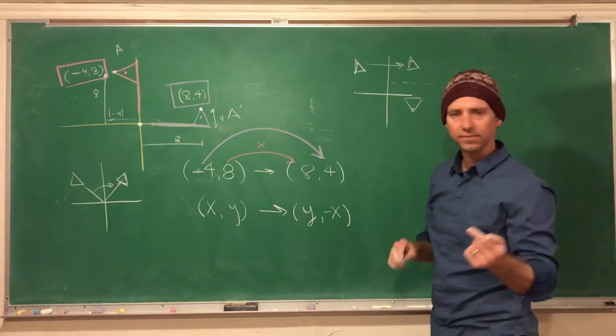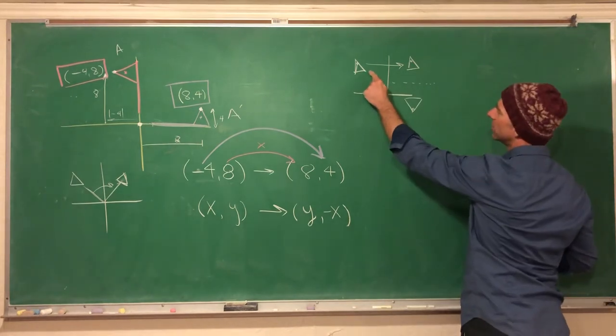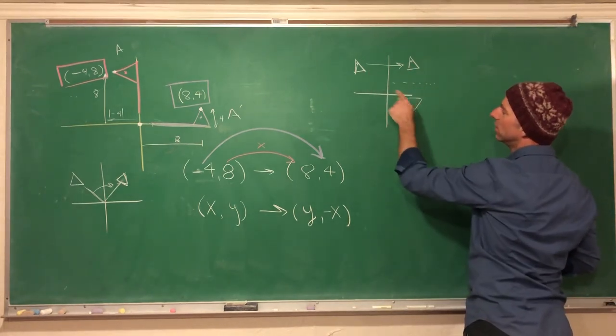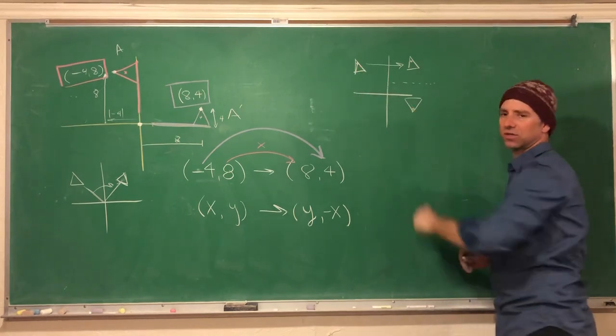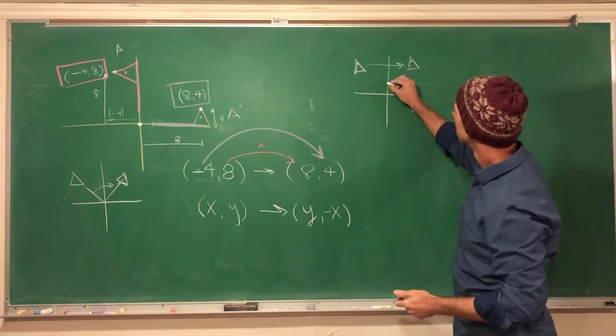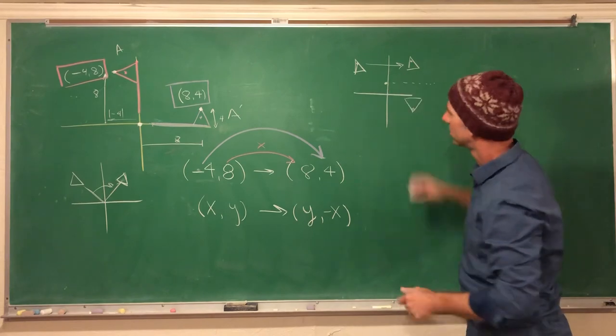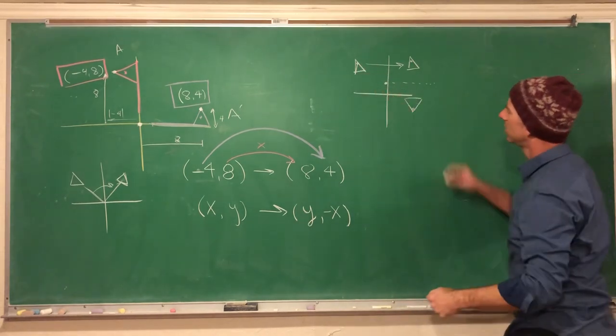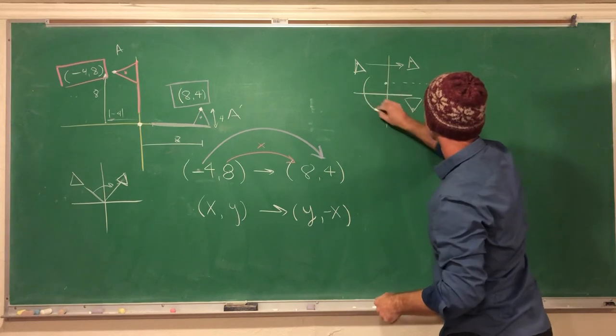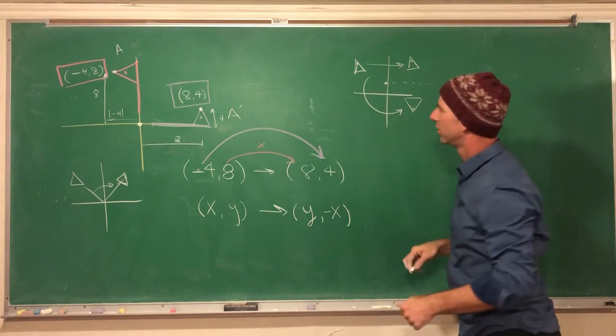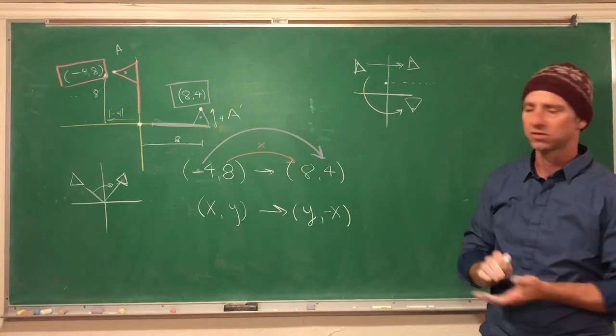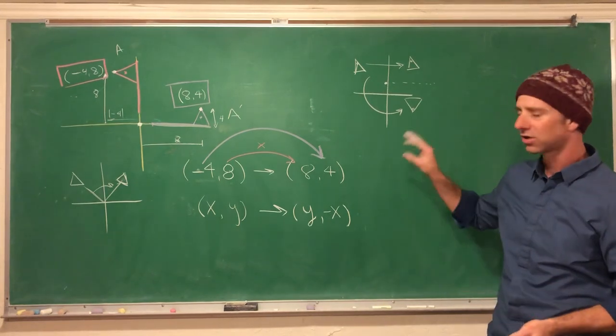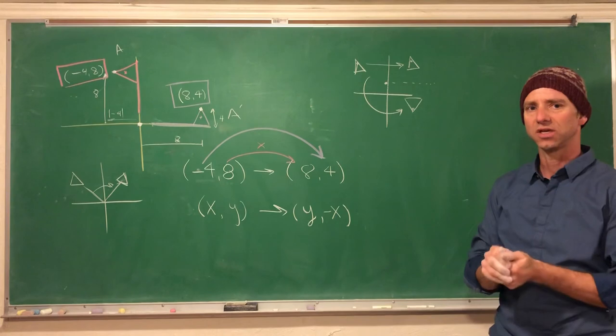One thing I want you to notice - even though I just did one, two, I could also go from here over to here somehow. Maybe if I just did a rotation, maybe this to here would have been a rotation 180 degrees clockwise or counterclockwise. It doesn't matter. So there's lots of ways to do the same transformation.